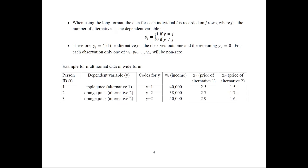In the long format, Y equals 1 if alternative J is the observed outcome, and the remaining Y_k values equal 0. So for each observation, only one of Y_1 through Y_M would be 1 — the one the individual selected — and the rest would be equal to 0.